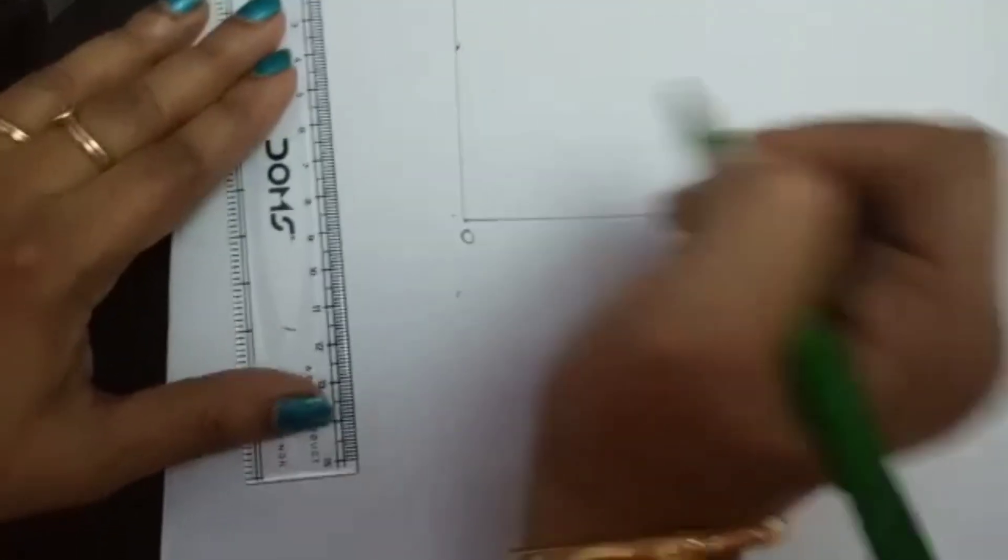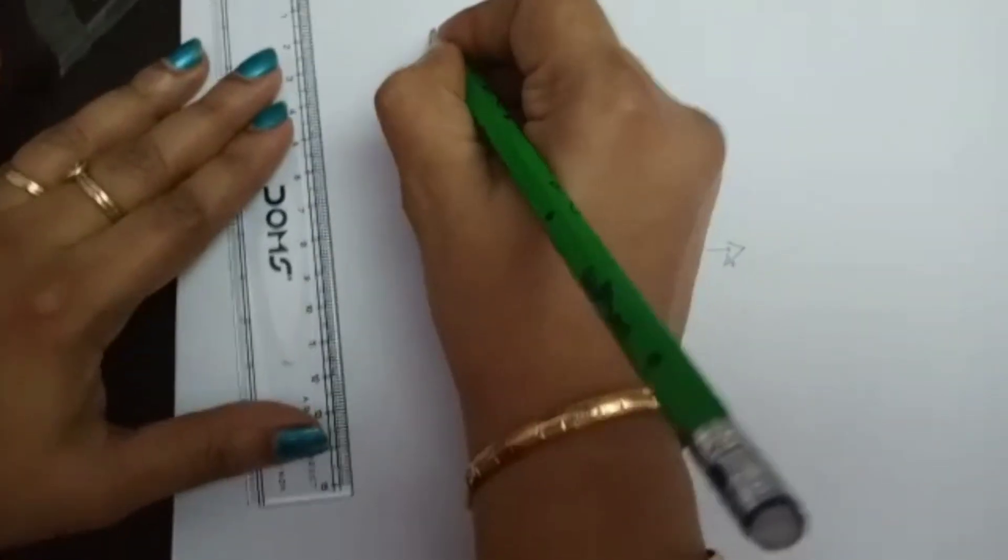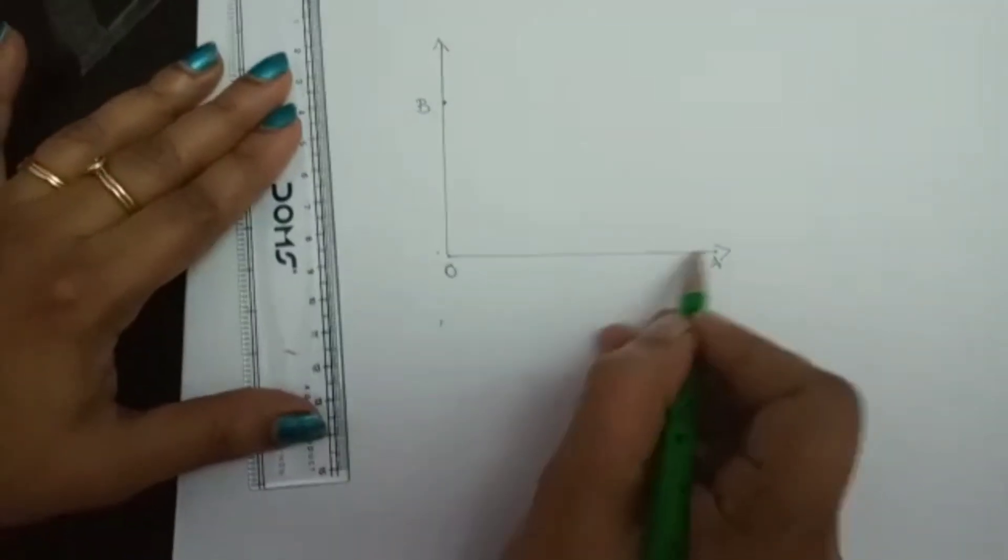And this point I'm marking as point B. This is ray OB and this is ray OA.